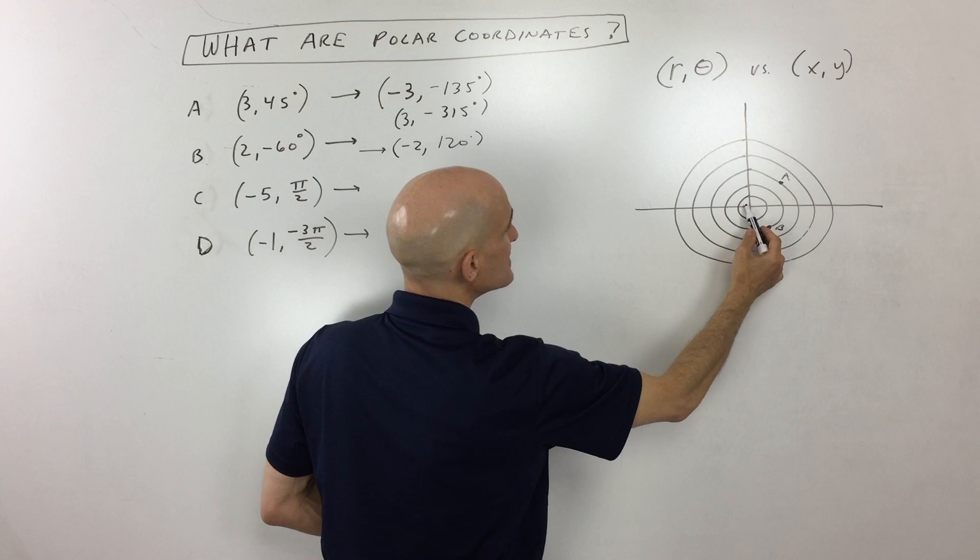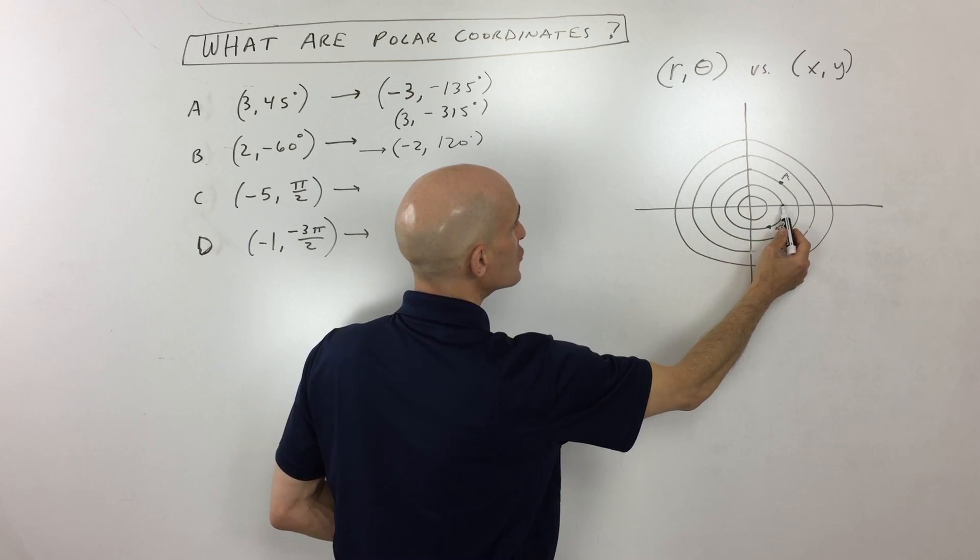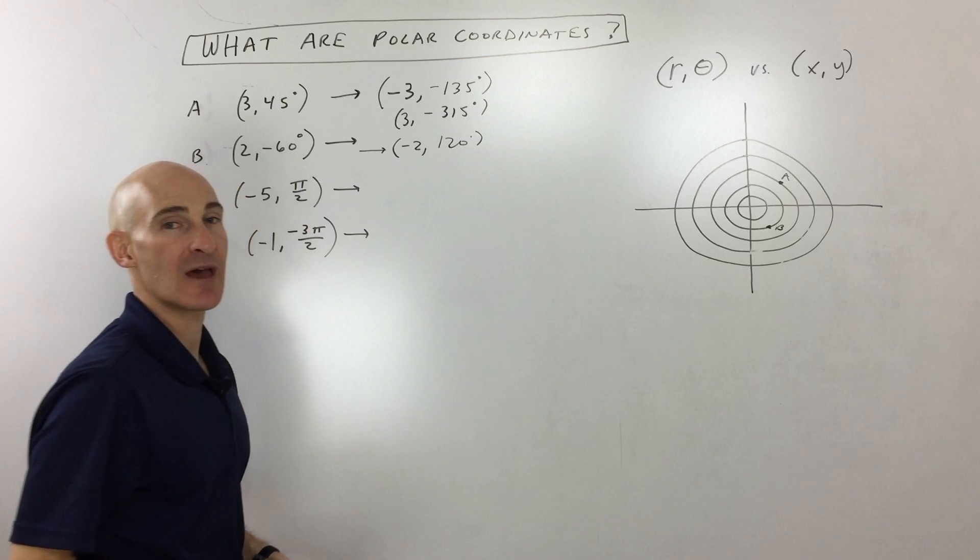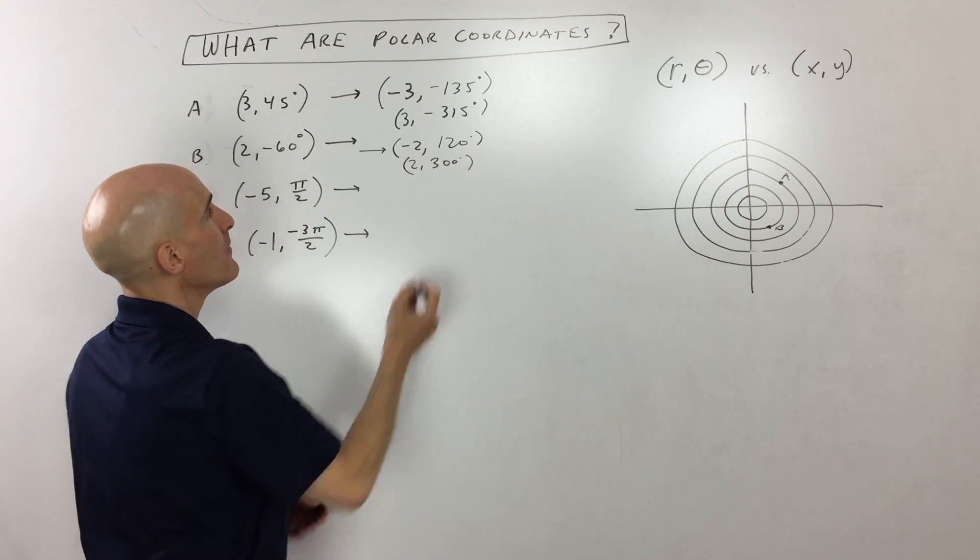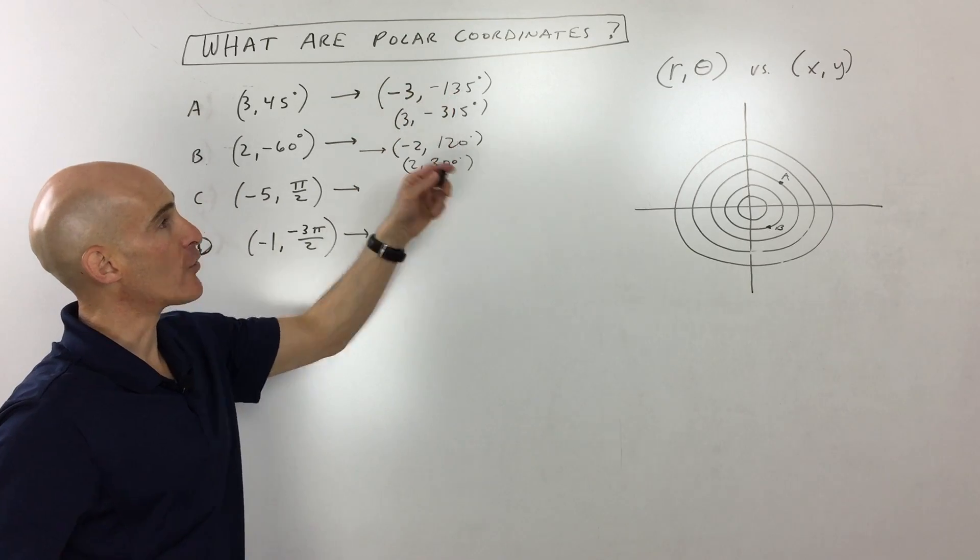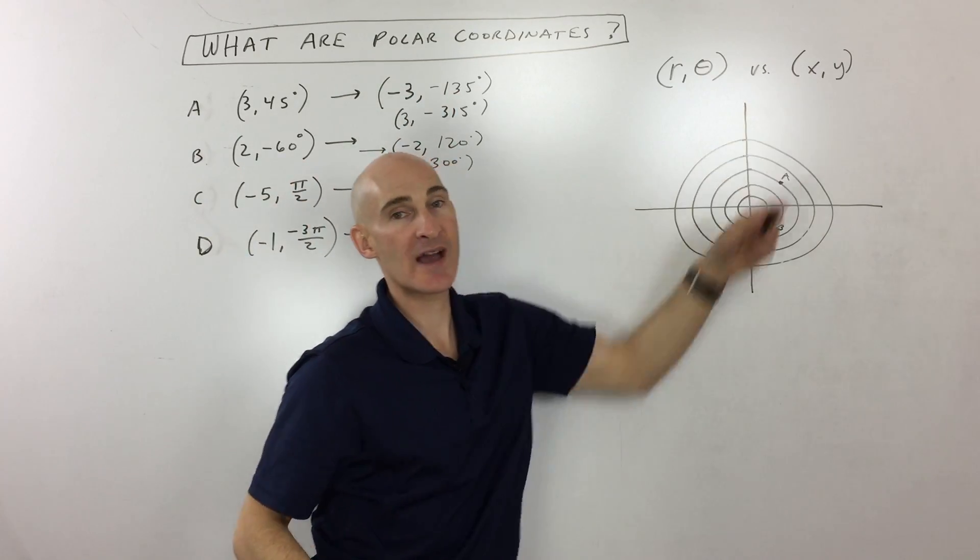Or you could do, let's see, you could do positive 2, and then you could go all the way around like that. So how many degrees would that be? 300, right? So (2, 300°). But the main thing is you've got r and theta, radius and angle, as opposed to x and y left and right.